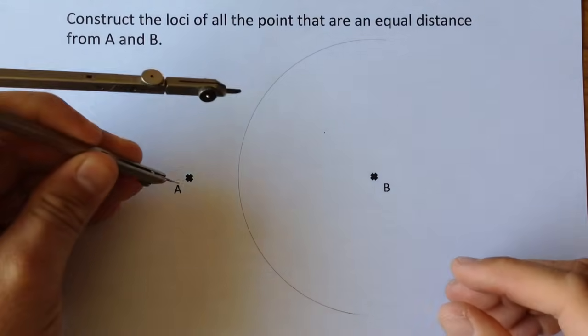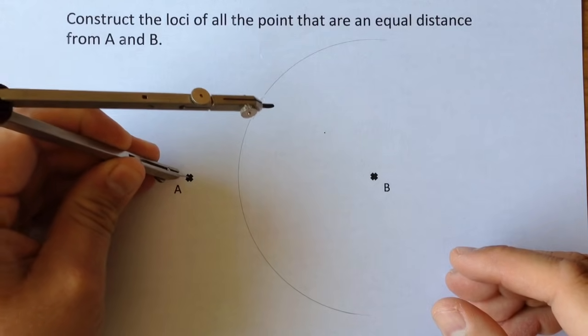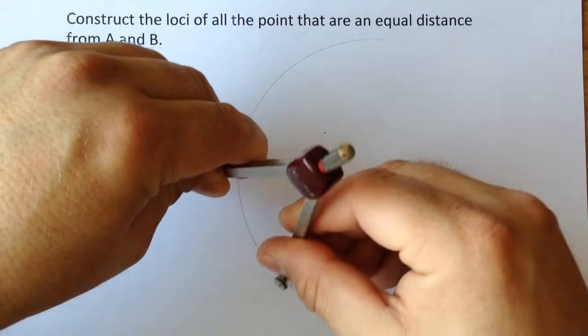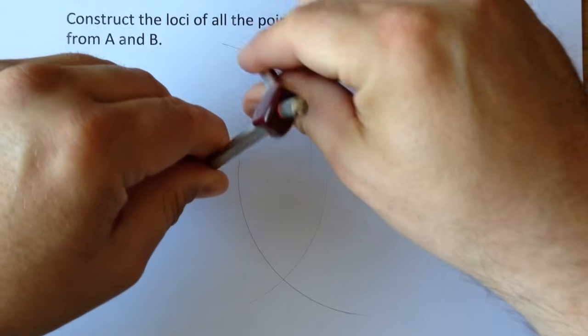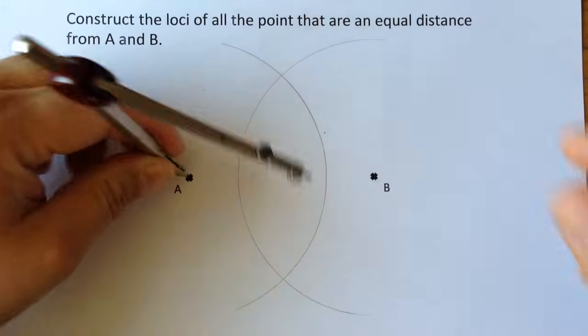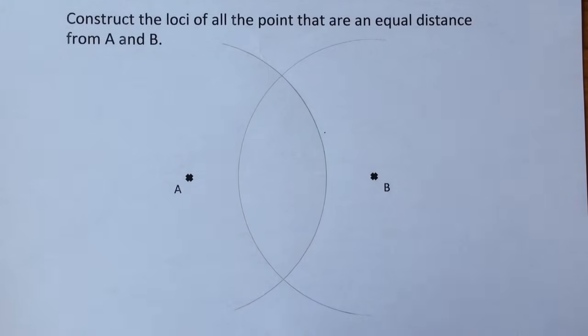And then move your compass to the other point. Again, don't alter it, draw a good size arc so that the two cross at the top and they cross at the bottom.